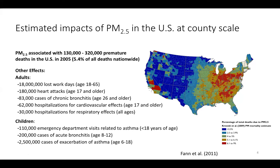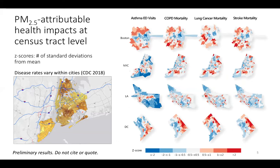What we wanted to do with this study was go beyond the county scale and look within individual cities — how does the burden of PM2.5 on various health outcomes change by neighborhood? PM2.5 varies quite a bit within cities, but disease rates also vary quite a bit. On the left is a map of baseline asthma prevalence in New York City, showing substantial spatial heterogeneity. Our objective was to implement health impact assessment at the census tract level, accounting for spatial variation in both disease rates and PM2.5.